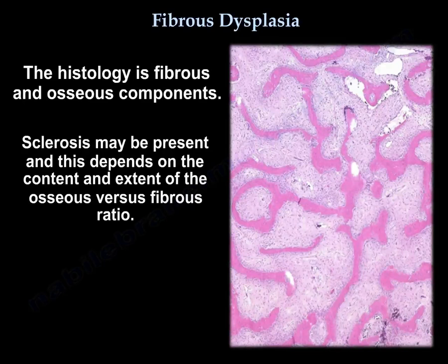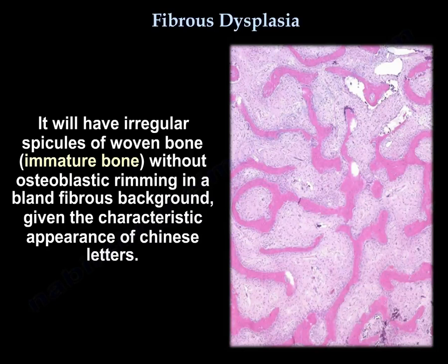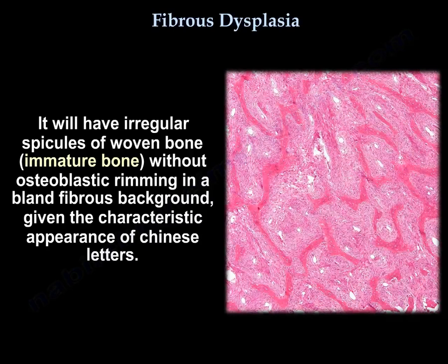The histology has a fibrous and osseous component. Sclerosis may be present and depends on the content and extent of the osseous versus fibrous ratio. It will have irregular spicules of woven bone, which is immature bone, without osteoblastic rimming, in a bland fibrous background, giving the characteristic appearance of Chinese letters.